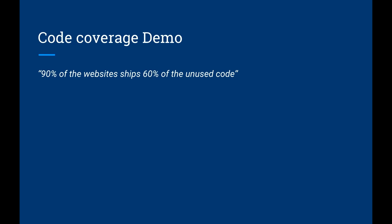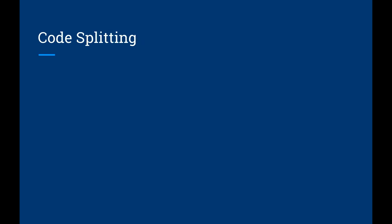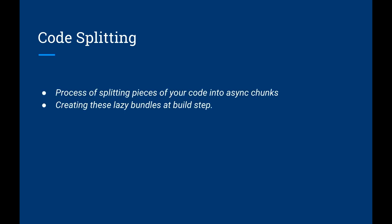You can see all the red sections indicating unused code. For example, we are using a date library that is probably not needed for this view — it will only be needed when the user clicks a button, so it should be loaded asynchronously. This is how you can figure out what code is not needed. After identifying it, you need to split the code. About 90% of websites are shipping 60% unused code — this is what we will be addressing.